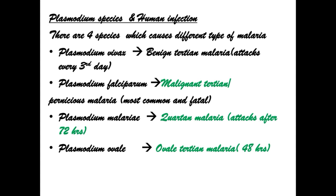There are four species which cause different types of malaria. First, Plasmodium vivax causes benign tertian malaria. Second, Plasmodium falciparum causes malignant tertian malaria. Third, Plasmodium malariae causes quartan malaria. Fourth, Plasmodium ovale causes oval tertian malaria.